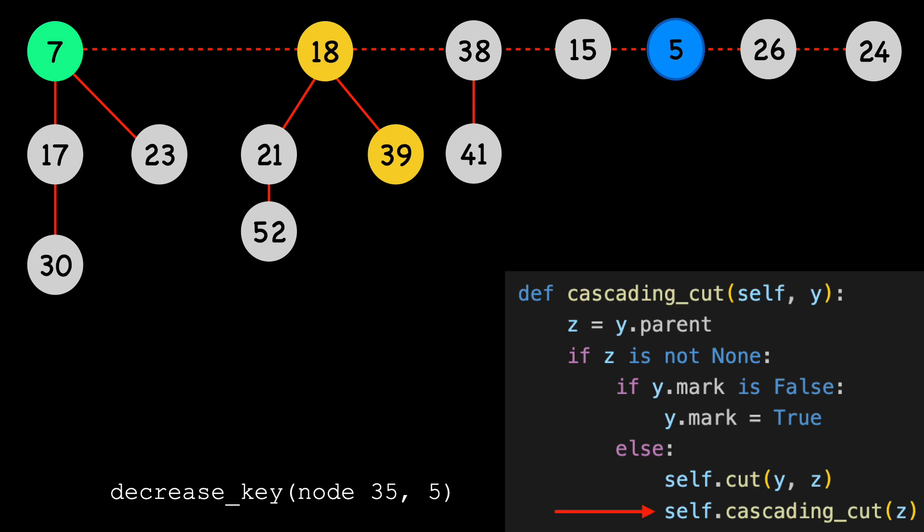Again, we call cascading cut. This time, Z is node 7, the node that's colored green. We can immediately see that Z has no parent, so we've reached the end of our recursion.